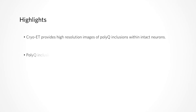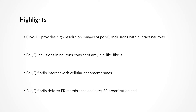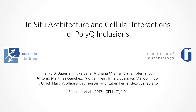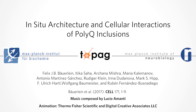In summary, we have used cryo-electron tomography to provide high-resolution images of polyQ inclusions within intact mouse neurons and human cells. We have shown that polyQ inclusions consist of amyloid-like fibrils, and that these fibrils interact extensively with cellular endomembranes. The polyQ fibrils deform the membranes of the endoplasmic reticulum and alter its organization and dynamics. This work has been a collaboration between the Max Planck Institutes of Biochemistry and Neurobiology, within the ERC-funded TOPAG consortium.